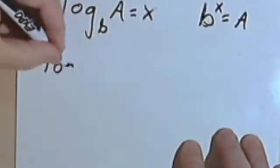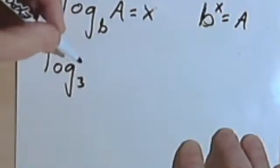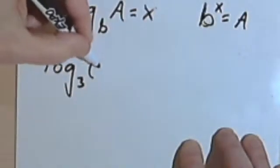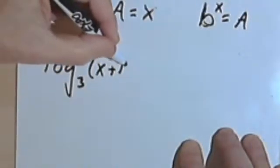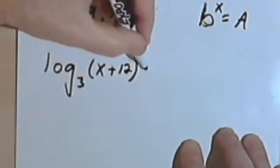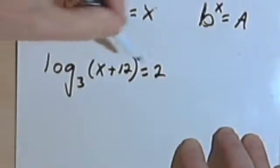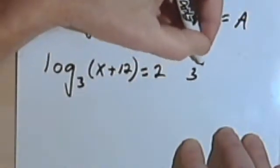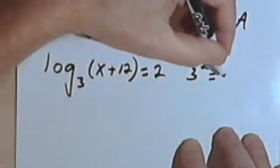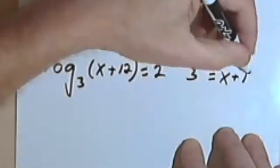Okay, so that wasn't that bad. Let's try this. The log base 3 of x plus 12 equals 2. Keep doing the same procedure. 3 raised to the second power, or 3 squared, equals x plus 12.